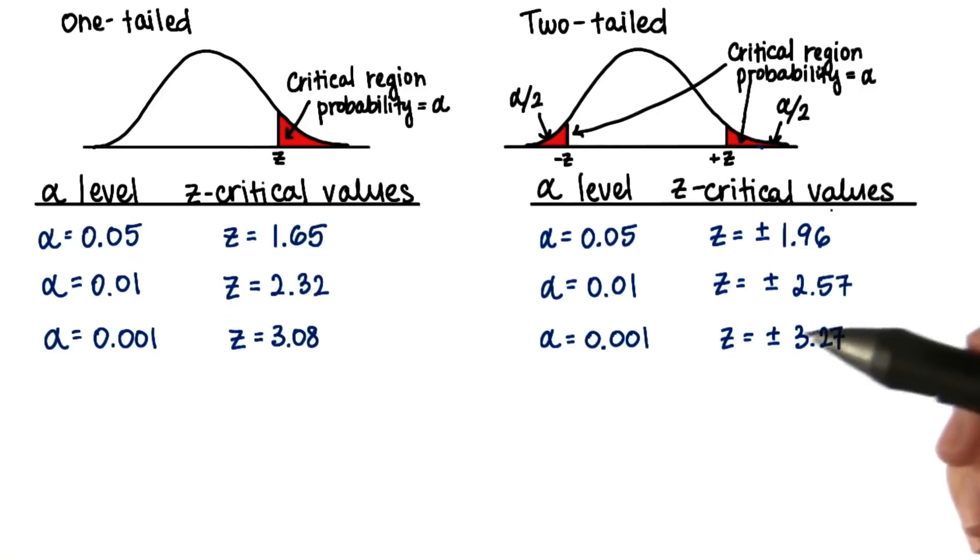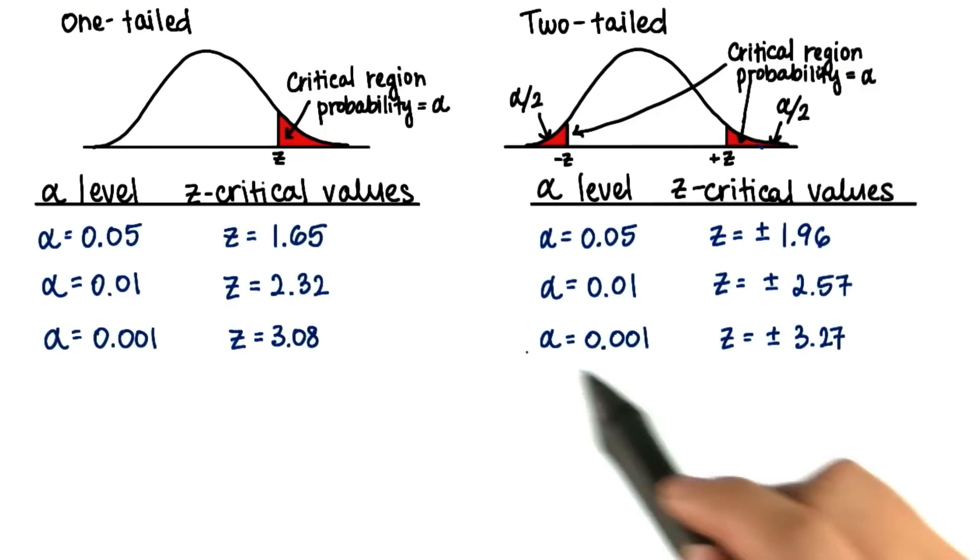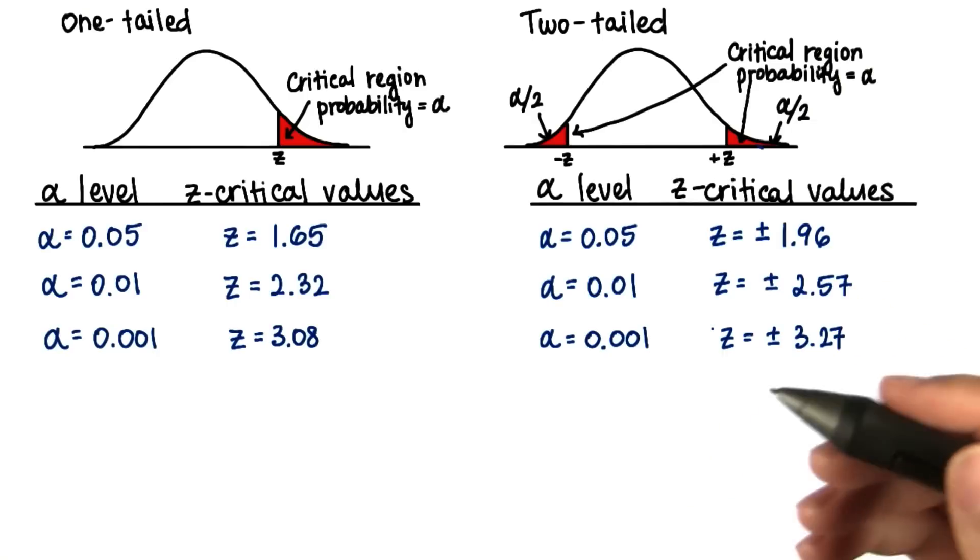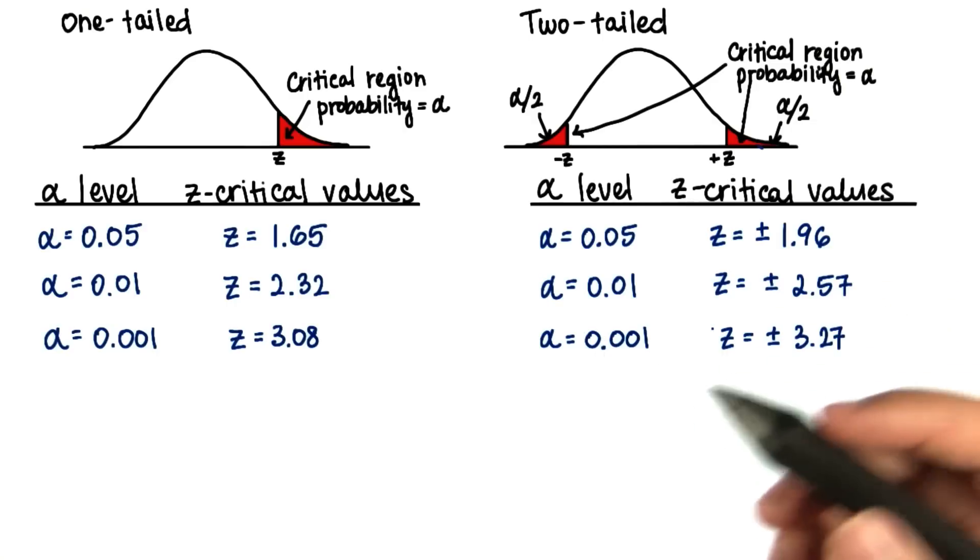When we do statistical tests, we'll set our own criteria for making a decision. In other words, we'll choose an alpha level, and then we'll decide that if the probability of obtaining a particular sample mean is less than that alpha level, then there's evidence of an effect.